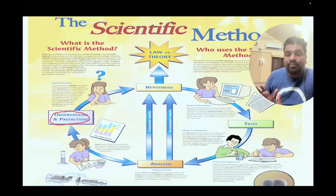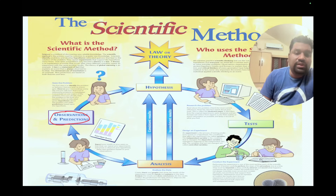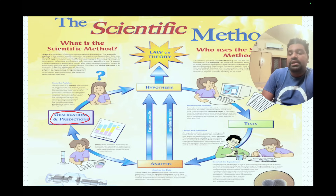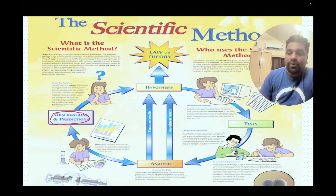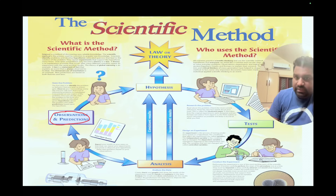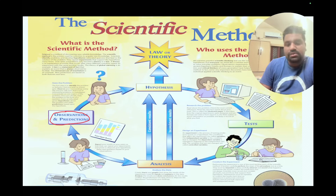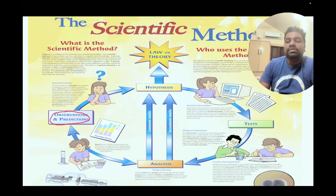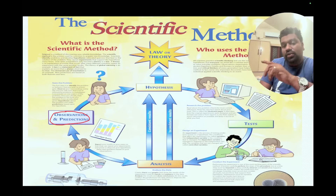This is a cycle that propels the system of medicine. Any problem in health, any problem in medical science, any way to treat medical science relies on this algorithm: observation, asking the right questions, hypothesis generation, testing, analysis, and then going back to observation and predictions. This cycle forms the basis of evidence generation, which is the whole foundation of modern medicine.